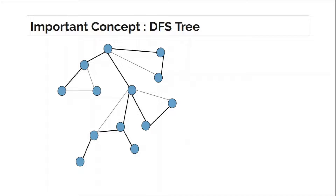If you look at the black edges, they form a tree — and a tree is always connected. So this forms a DFS tree. There are two kinds of edges: the dark black ones and the gray ones. The gray edges are the ones that were not traversed during DFS. Now in a graph there is a notion of forward edge, back edge, and cross edge, but while discussing the DFS tree we will not consider cross edges.